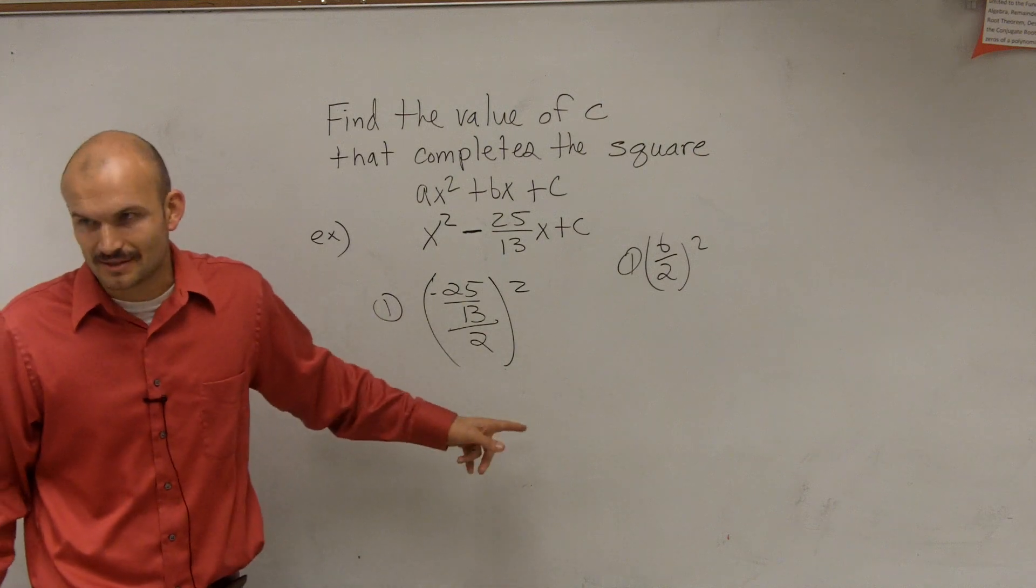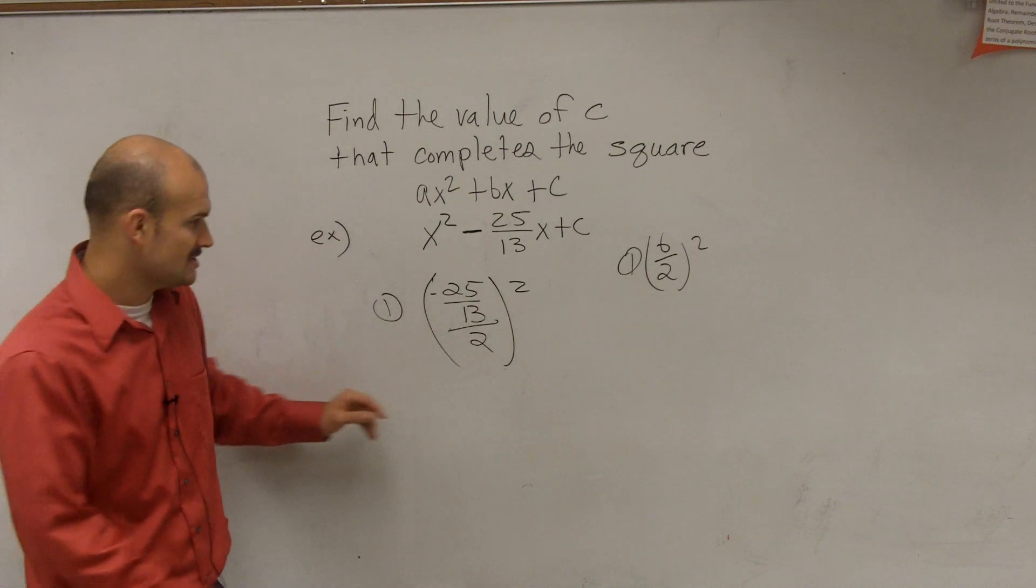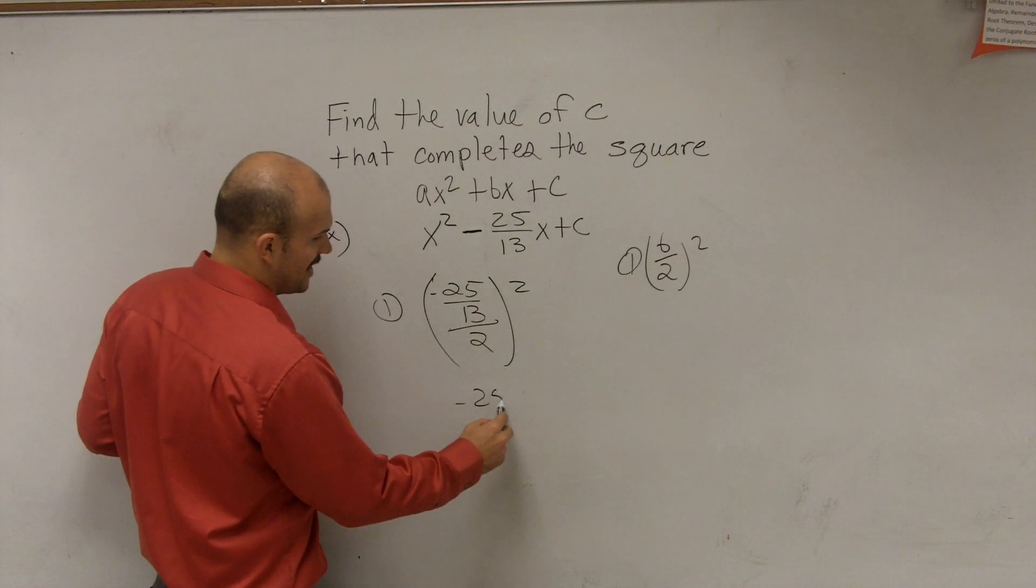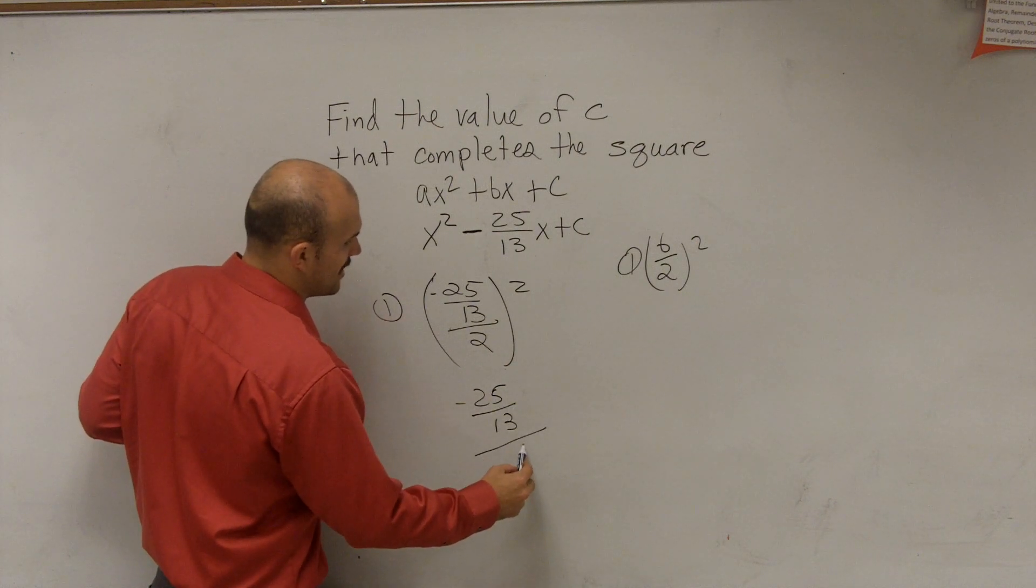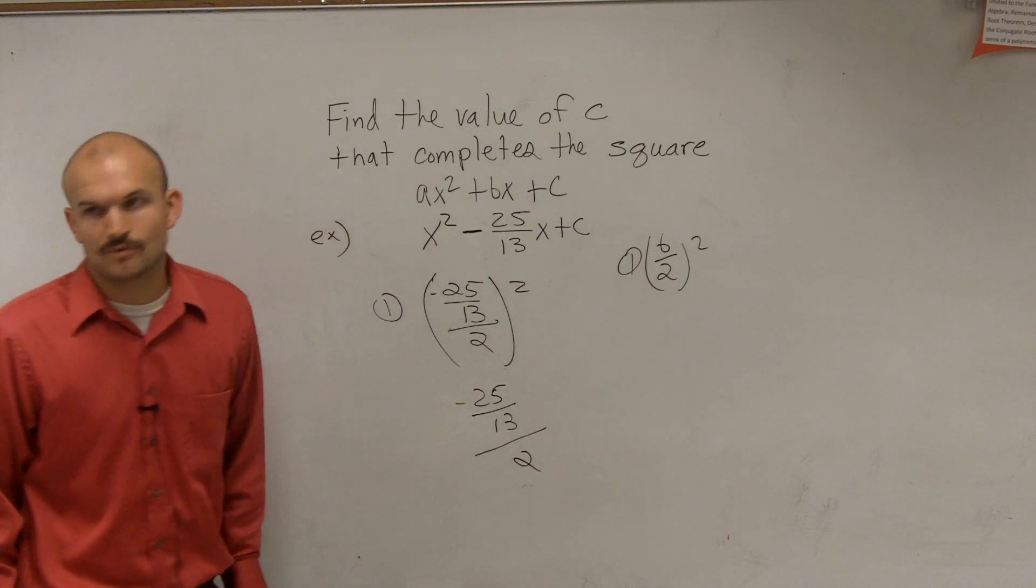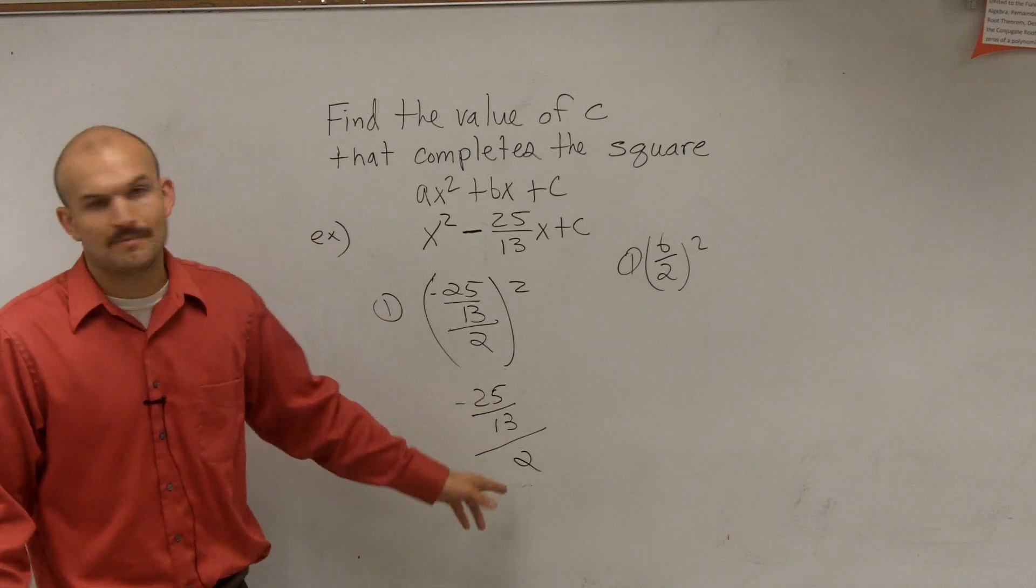Now this is going to need a little bit more work. 13, 25, negative 25 divide by 13, divided by 2. How do we do a double fraction? How do you divide by a fraction?